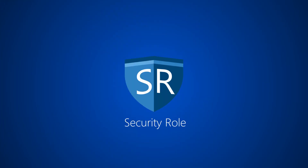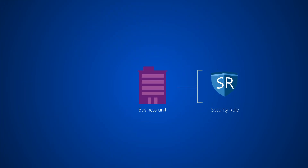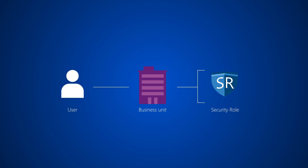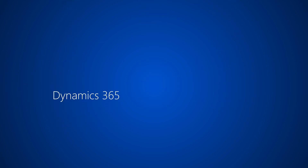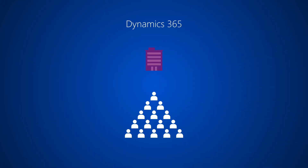As mentioned at the beginning of this video, security roles are created within a business unit, and every user must be assigned to one business unit. Dynamics 365 uses business units to differentiate the various areas of your company that may have different security needs. By default, when you set up Dynamics 365, it will create a business unit that applies to your entire organization. This is called the root business unit.